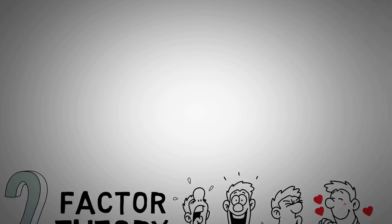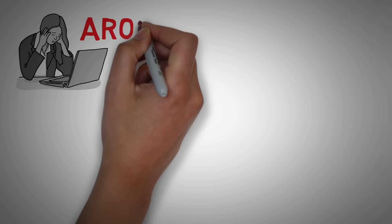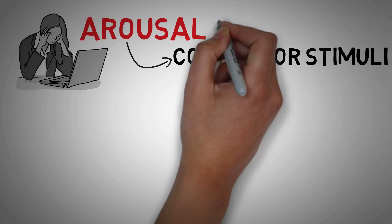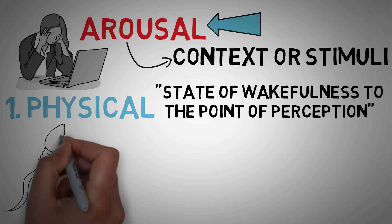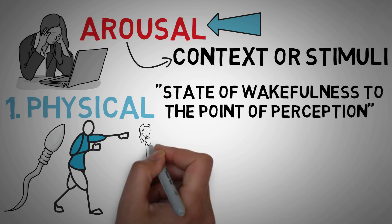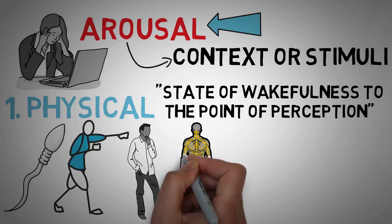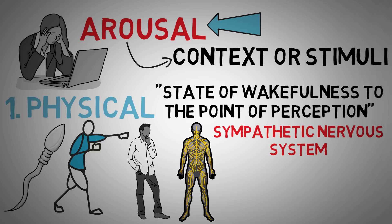Schachter and Singer believed that people felt emotions when they experienced arousal and had context or stimuli to help them identify and label these feelings. This process started with arousal — the first factor, which is physical. In the world of psychology, arousal is a state of wakefulness to the point of perception. And while it does have a role in sexual feelings, arousal is also important in fight or flight, consciousness, or just simply paying attention. Whenever a person encounters stimuli that evokes certain emotions, they first experience it as physiological arousal, which takes place in the sympathetic nervous system. Maybe your palms get sweaty, or your chest starts to tighten, or maybe your hands and feet become numb.